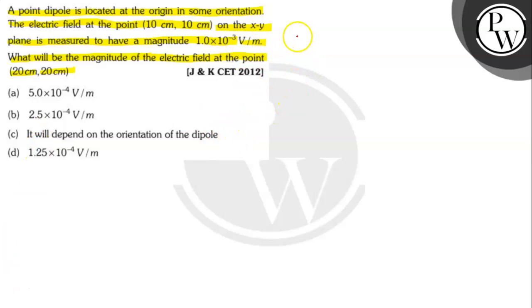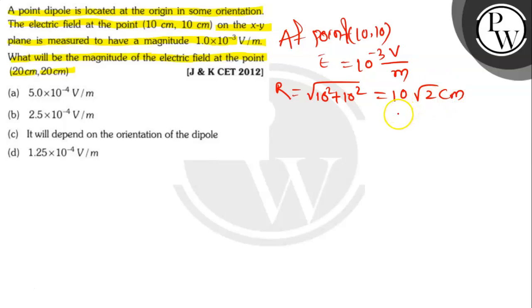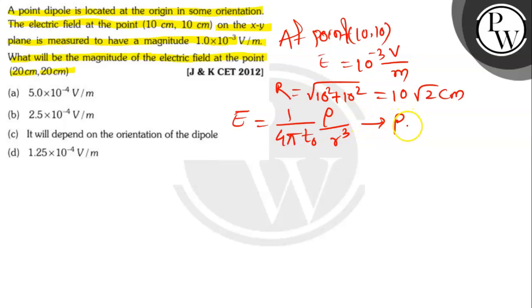At point (10, 10), E equals 10⁻³ V/m. Its distance from the origin R is √(10² + 10²) = 10√2 cm. So E = (1/4πε₀)(P/R³), which gives P = 4πε₀ × R³ × E.